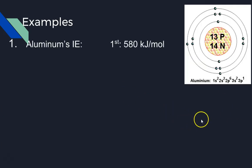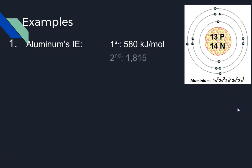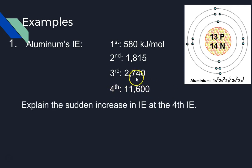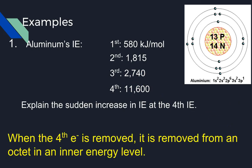Let's look at the example of aluminum. Aluminum's first ionization energy is 580 kilojoules per mole — we're removing the P1 electron. The second ionization energy is 1,800, because as we remove that electron, the size of the atom decreases a little bit. So the third electron requires even a little bit more energy. Then look at the fourth ionization energy — notice the huge jump. As we remove the fourth electron, we're now removing it from the second energy level, and it requires a lot more energy to remove an electron from a filled energy level, one that has a complete octet.